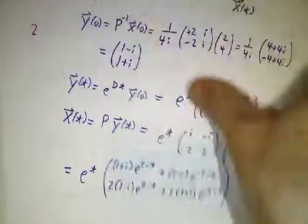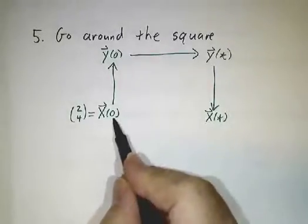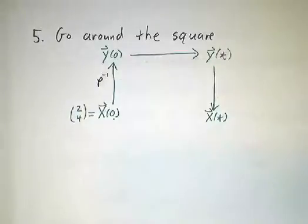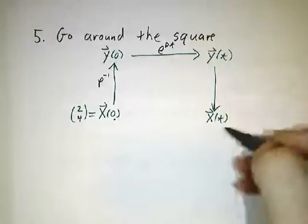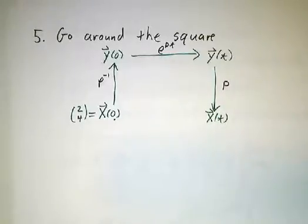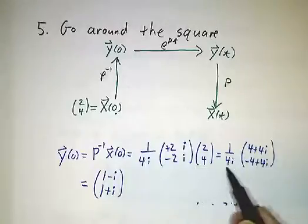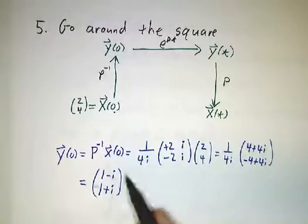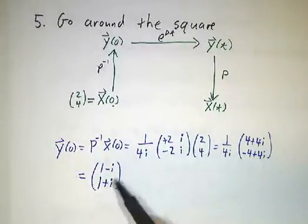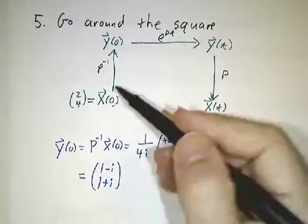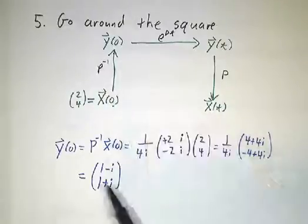And last, we go around our square. Now, this is the same procedure as always. We start with our initial value of x, we apply P inverse to get our initial value of y, we apply e to the dt to get our final value of y, and we apply P to get our final value of x. The first step, well, we multiply by P inverse, that's just arithmetic, and we get something with i's in it. You generally expect your coefficients y to have i's in them. Even if x started off as real, the eigenvalues and eigenvectors are complex, the change of basis matrix is complex, so you get a complex y.